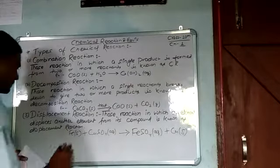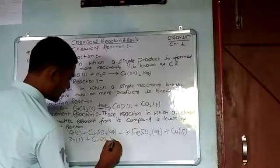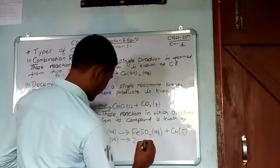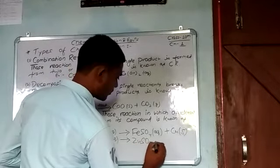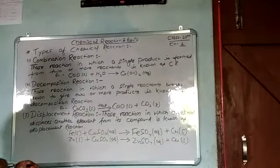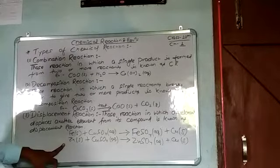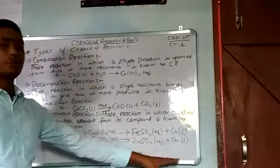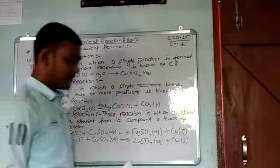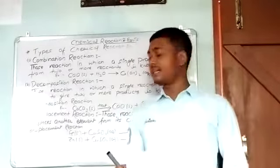Let us take another example. Zinc (solid) reacts with CuSO4 (aqueous). It also displaces copper and makes ZnSO4 plus Cu. In both reactions, we can see that both Fe and zinc displace copper from the compound CuSO4. So, zinc and iron are more reactive elements than copper, and they displace copper.